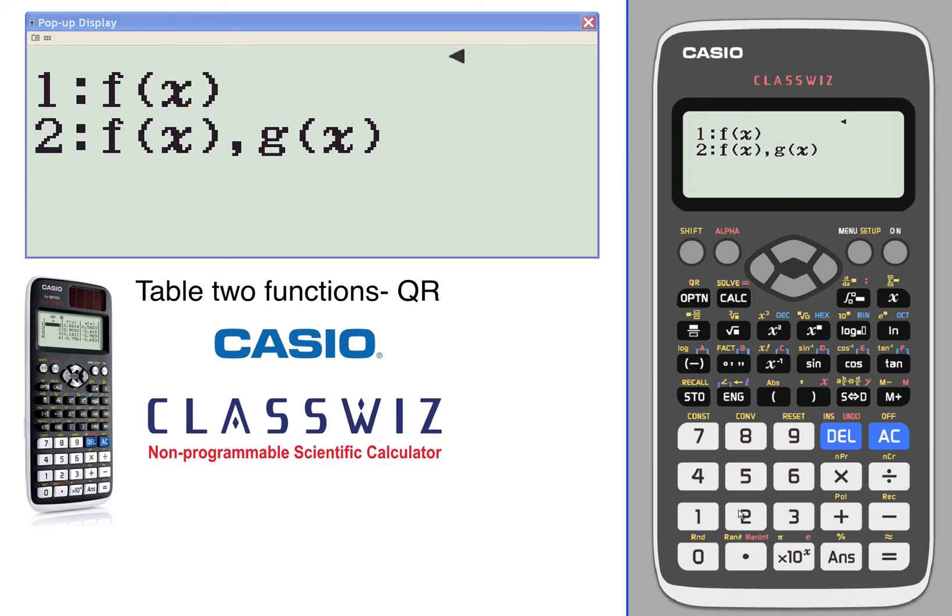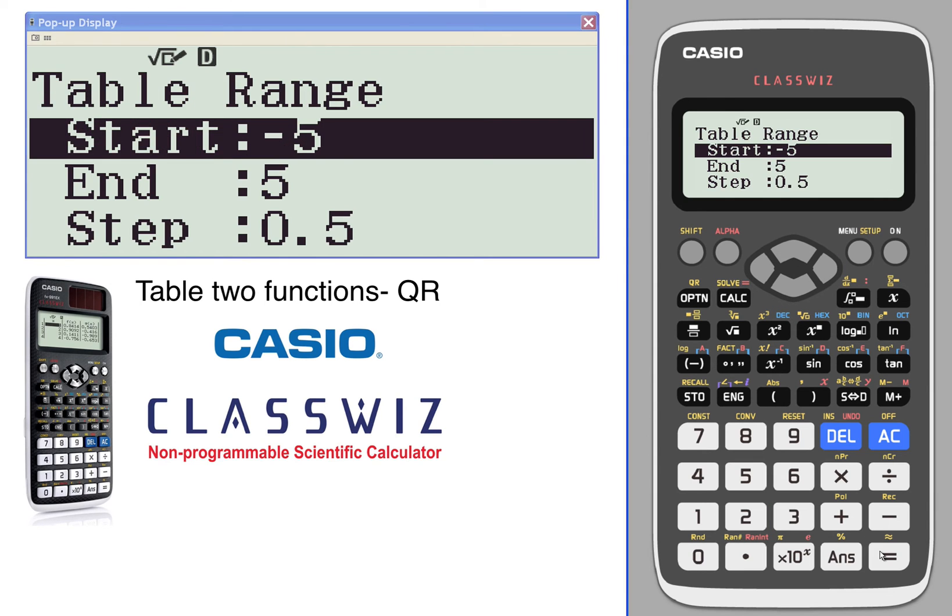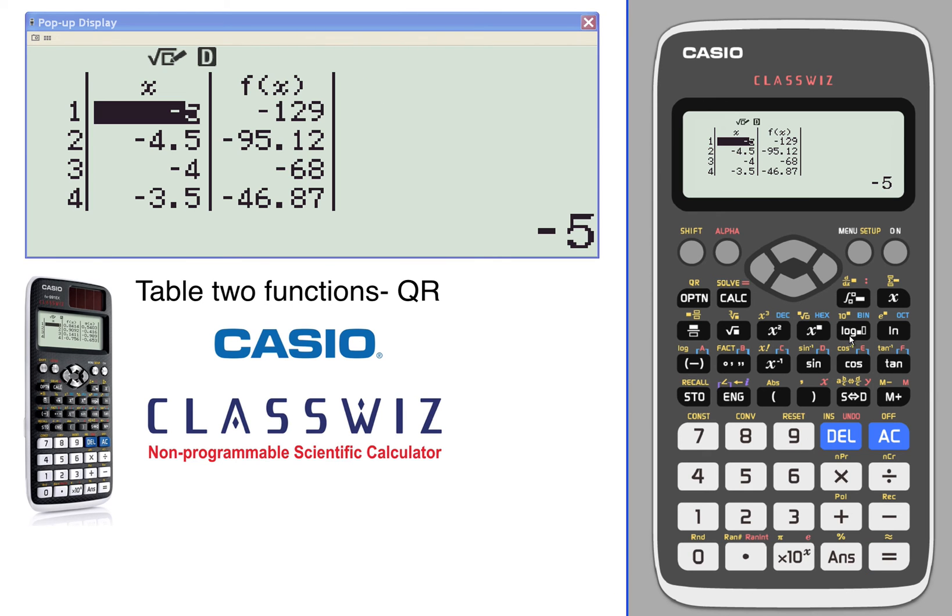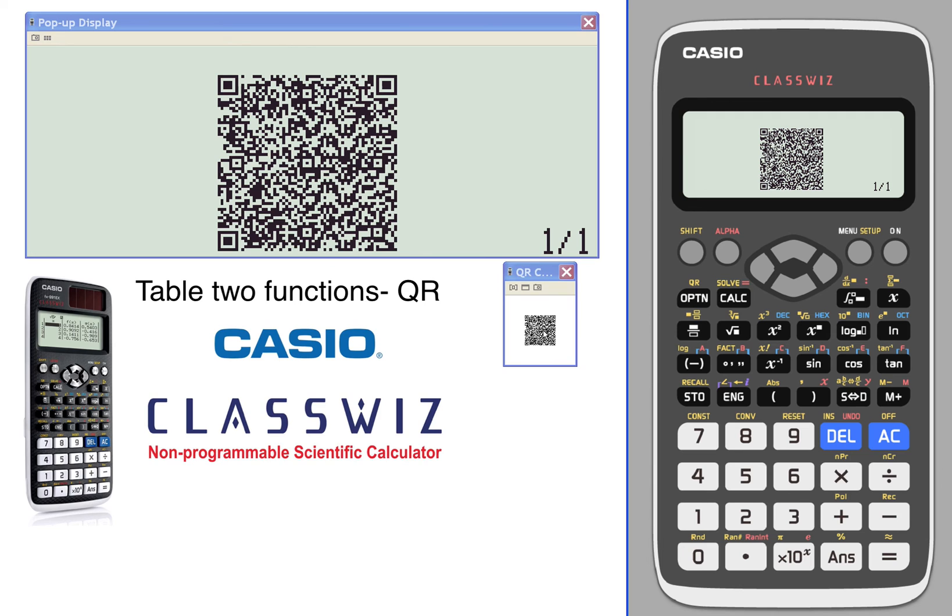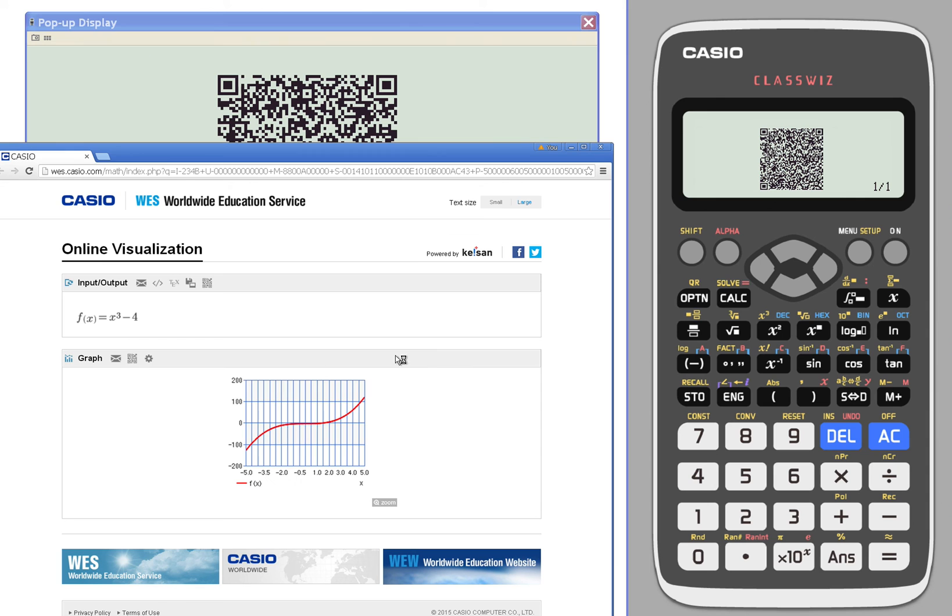This time we'll just look at the x squared function, or let's make it a little bit more interesting - let's make it an x cubed function. x cubed minus four, keep the same range. Generate a QR code, scan the QR code, and see that it generates our cubic function.